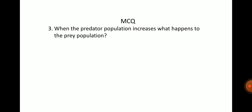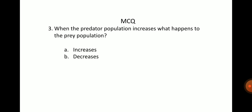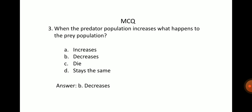When the predator population increases, what happens to the prey population? Options: A. Increases, B. Decreases, C. Die, D. Stay the same. The answer is option B — it decreases.